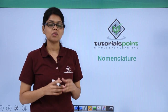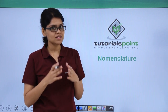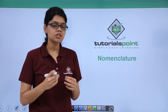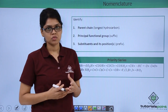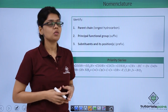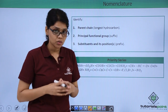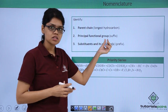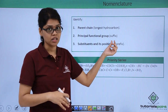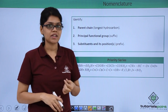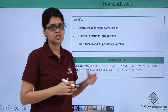In this video we are going to learn about how to write the nomenclature of alcohols, phenols and ethers. In order to write the nomenclature of any compounds we must have certain information: we need to identify the parent chain or the longest hydrocarbon, we need to identify the principal functional group or the suffix, and we also need to identify the substituents and their positions because they form the prefix of the name.